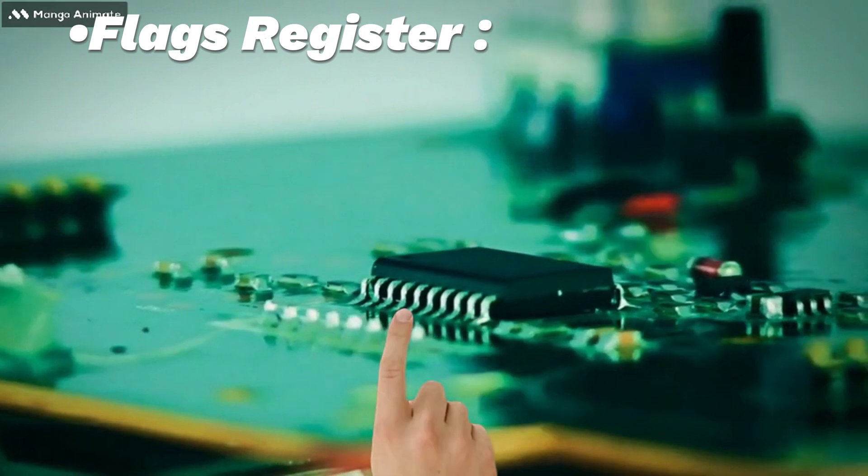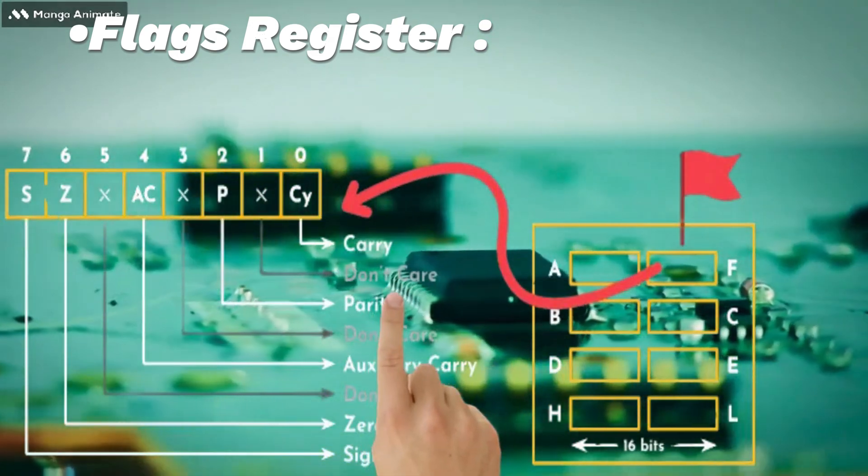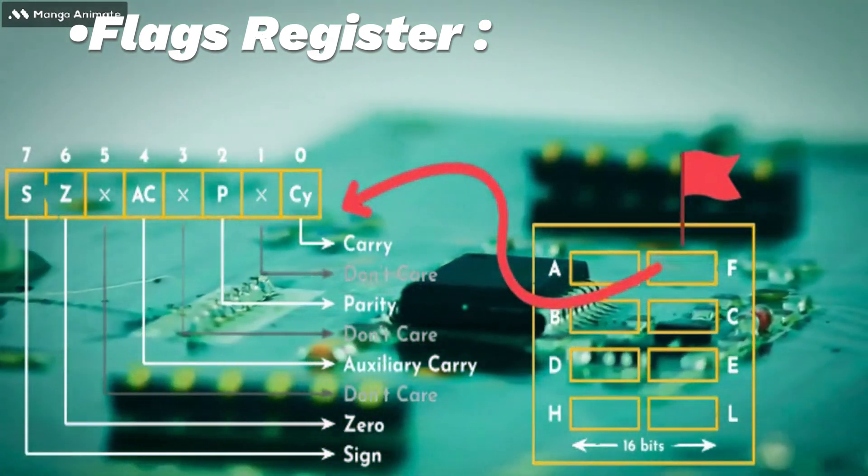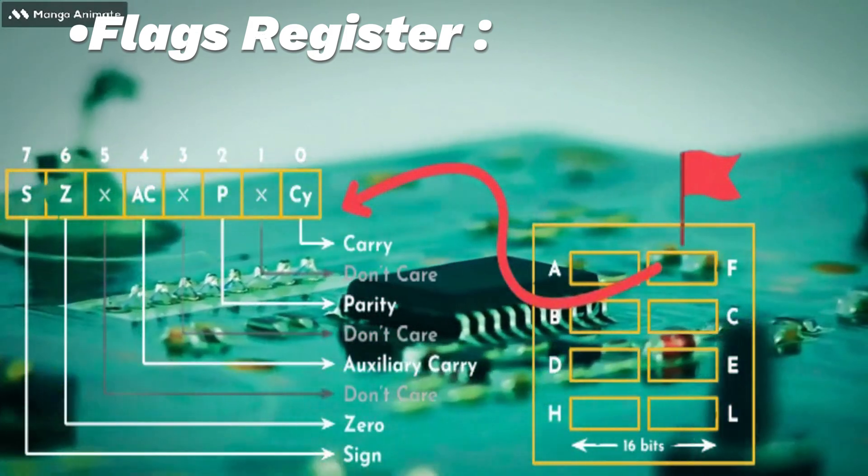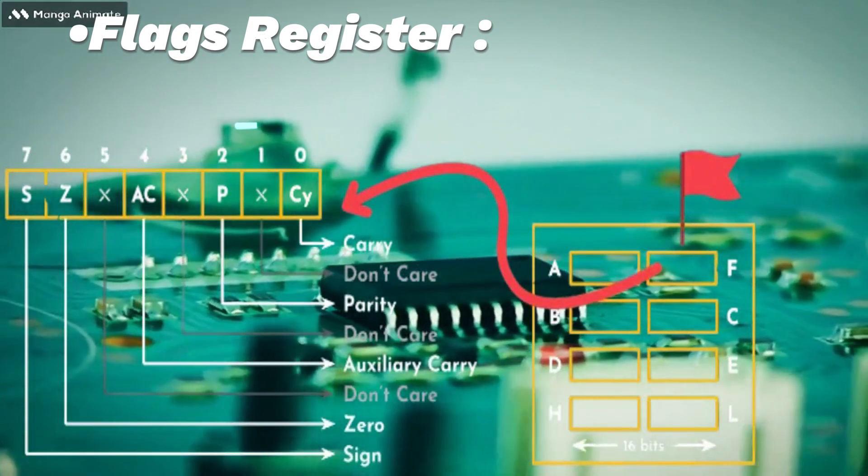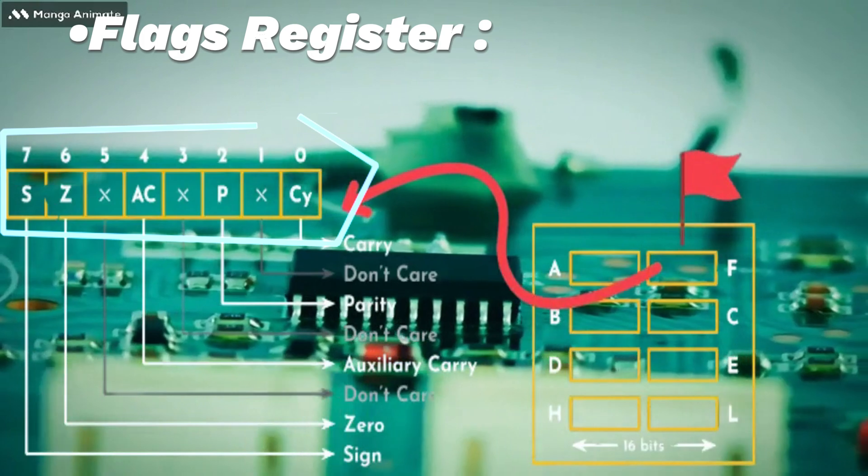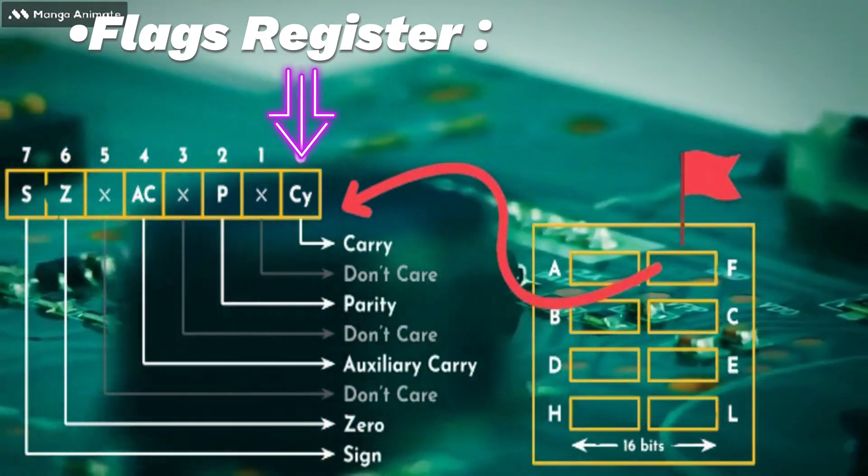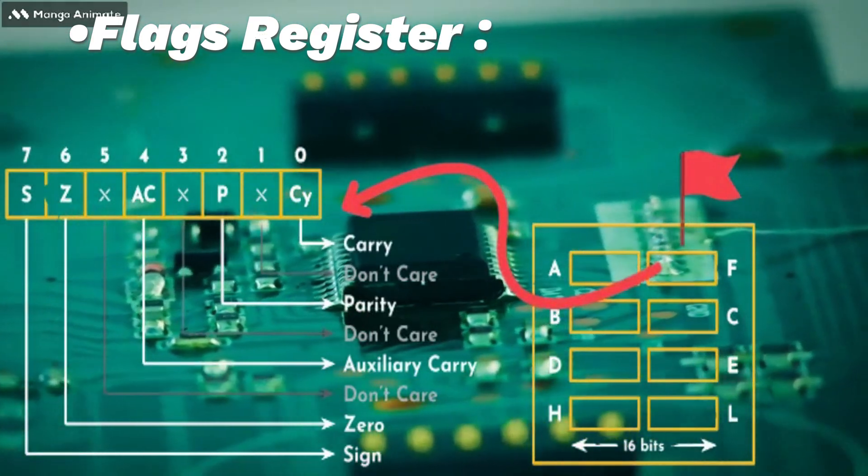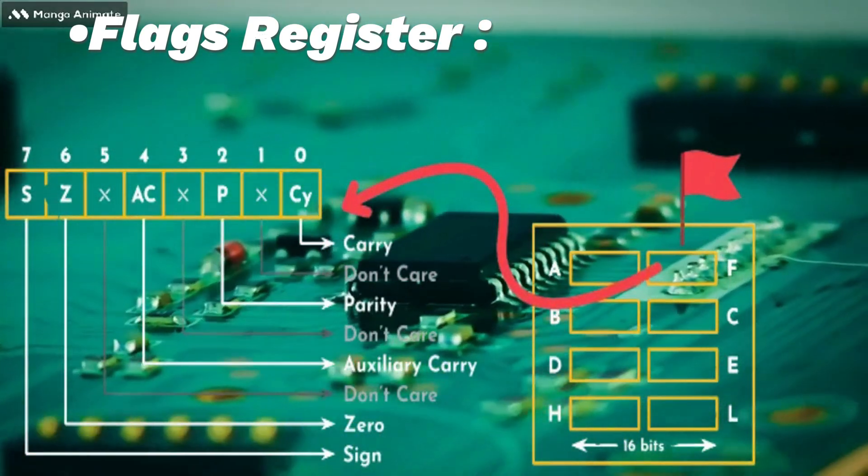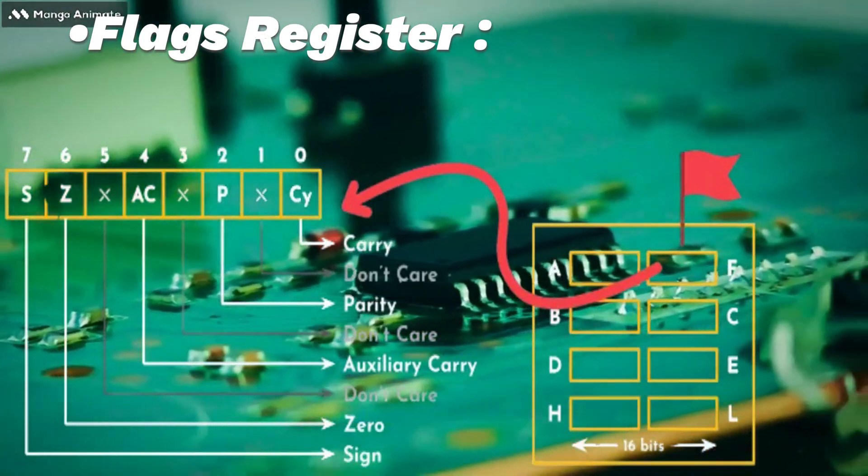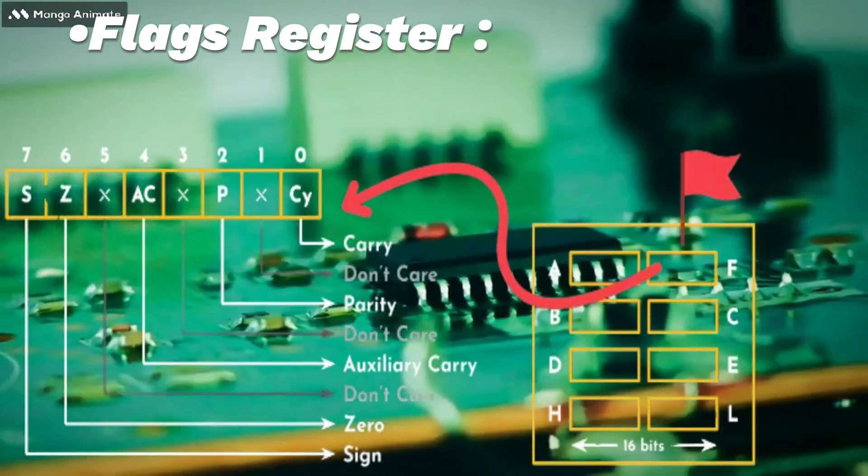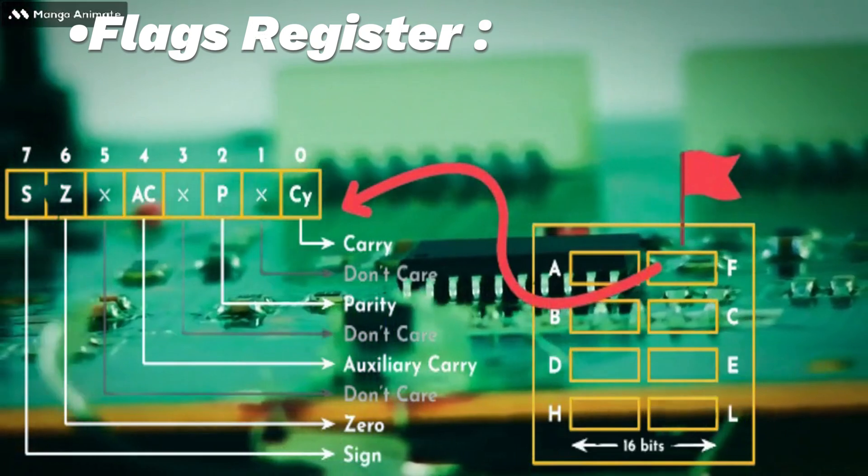Status register or flags register: The status register or flags register contains individual bits that indicate the outcome of operations, such as carry, overflow, zero results, and others. These flags help in making decisions and controlling program flow based on the results of previous operations.